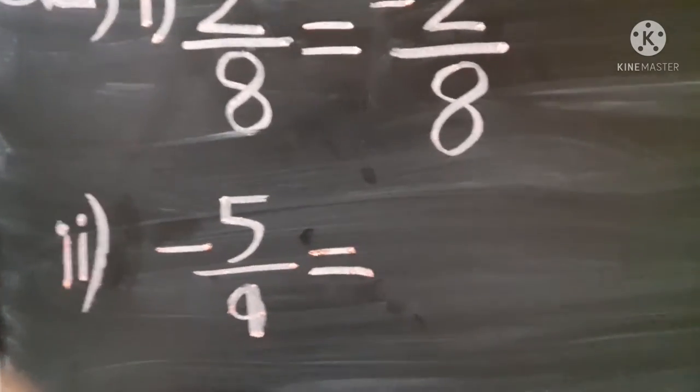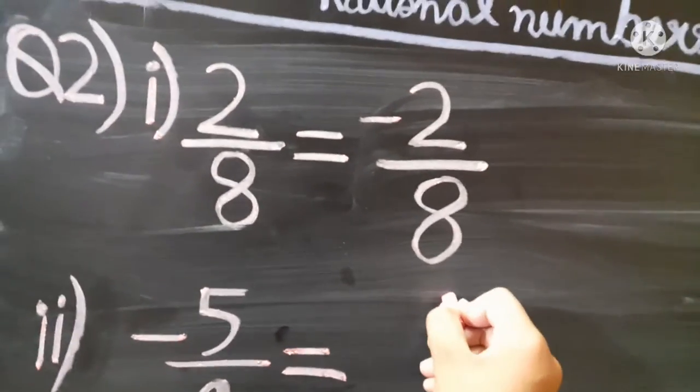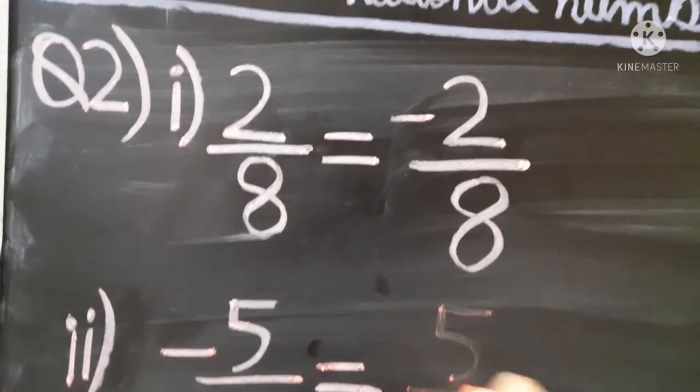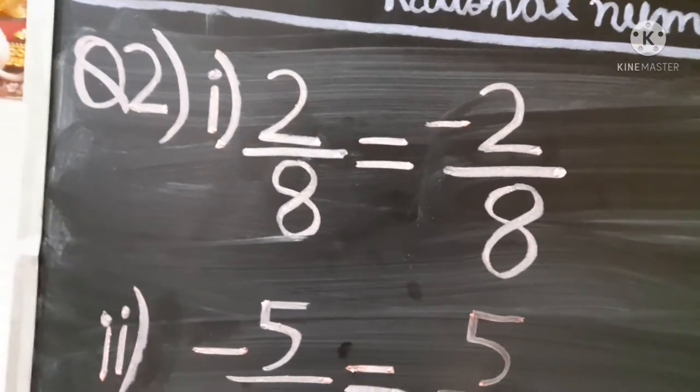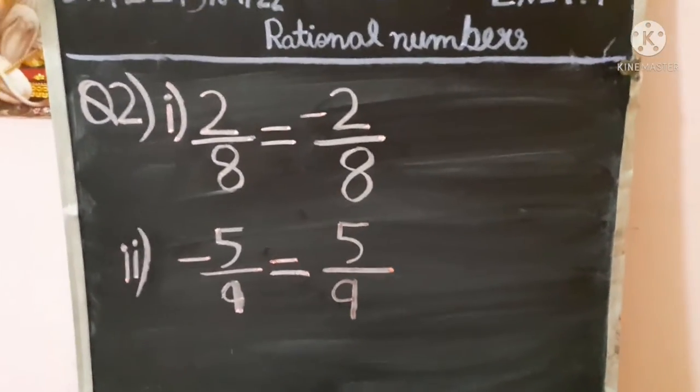The additive inverse of minus 5 upon 9 will be positive 5 upon 9. I have done two parts of Question 2. This is the easiest question in this chapter — there are only two exercises and both are easy. This additive inverse topic is from seventh class, where rational numbers and integers were also covered.